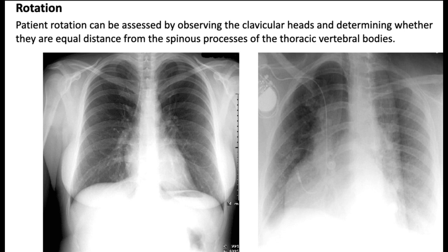Rotation refers to the alignment of the patient's chest and the x-ray detector. In a well-centered chest x-ray, the spinous processes of the vertebral column should be equidistant from the mediastinum. If the patient's chest is rotated too much to the left or right, it can lead to asymmetry in the lung fields and other structures, resulting in potential misdiagnoses.